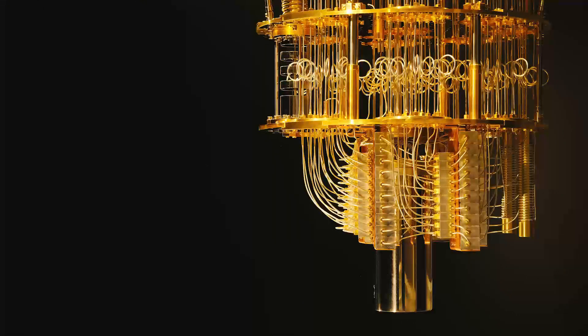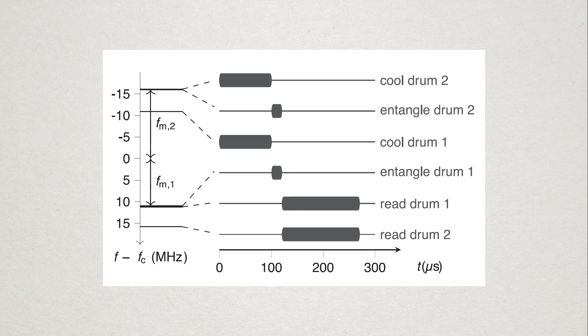So scientists were able to cool the drums down more by applying microwaves at a slightly lower frequency than the drum resonance. This helps to remove this additional temperature. Once the drums were cold, scientists managed to entangle the two drums.